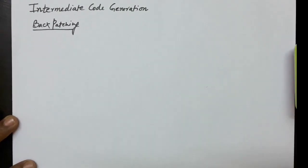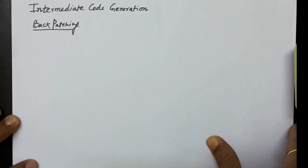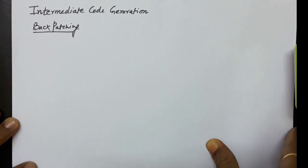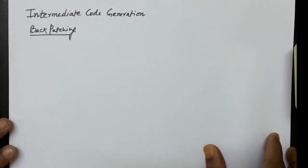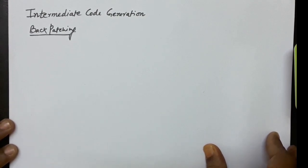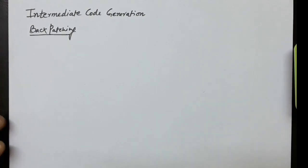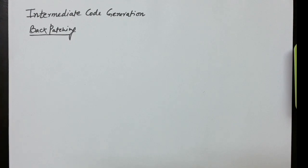Hello everyone. Continuing with our discussions on intermediate code generation, in this lecture we will discuss backpatching. Backpatching is about writing the three-address codes for conditional statements, loops, and switch-case statements. As the name suggests, we will be doing some kind of backtracking for writing the labels.